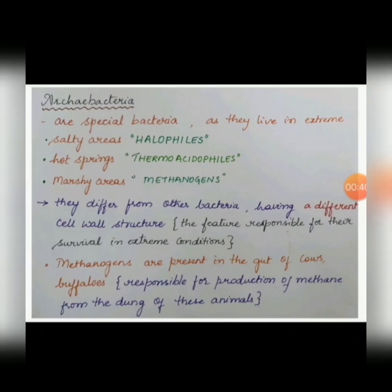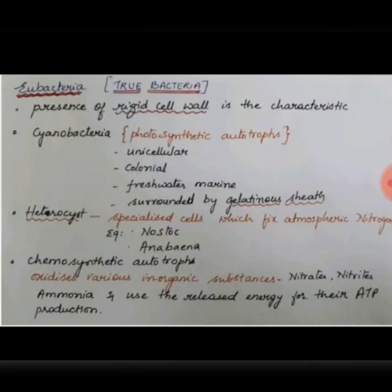Eubacteria are also called true bacteria — 'eu' meaning true, just as 'pseudo' means false. Eubacteria are called true bacteria due to the presence of a rigid cell wall, which is a characteristic feature. Cyanobacteria are photosynthetic autotrophs because they can prepare their own food.